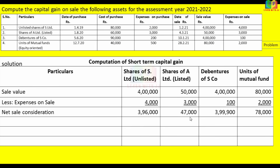From net sale consideration, we deduct cost of purchase: unlisted shares — 80,000; listed shares — 60,000; debentures — 90,000; mutual fund — 40,000. We also deduct expenses on purchase: unlisted shares — 2,000; listed shares — 3,000; debentures — 2,000; units of mutual fund — 500.